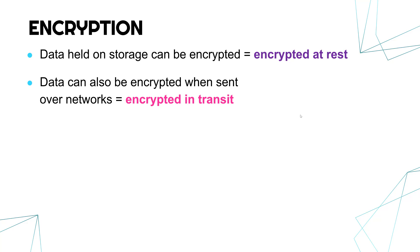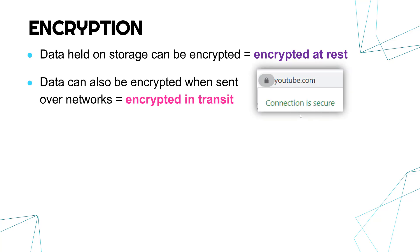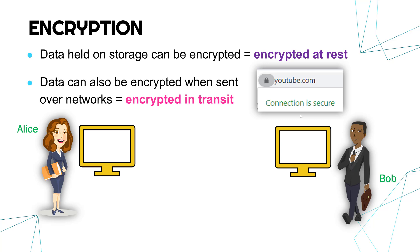Another important type is encryption in transit — this is where data sent over networks is encrypted. Every time you see a padlock or HTTPS, that means you're using encryption in transit, because data is moving from one computer to another and is being scrambled so nobody who intercepts it can understand it. For example, if Alice is sending a message to Bob, she might choose a secret key — in reality a long password or very long number.